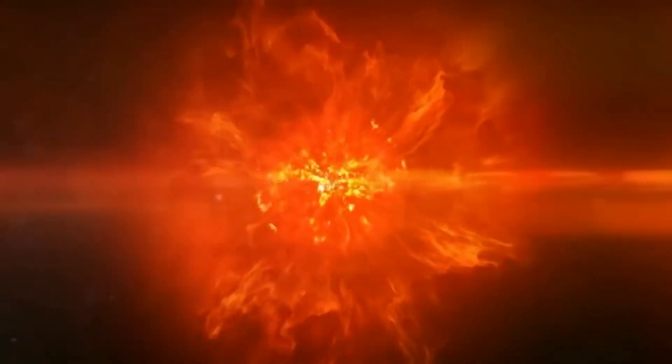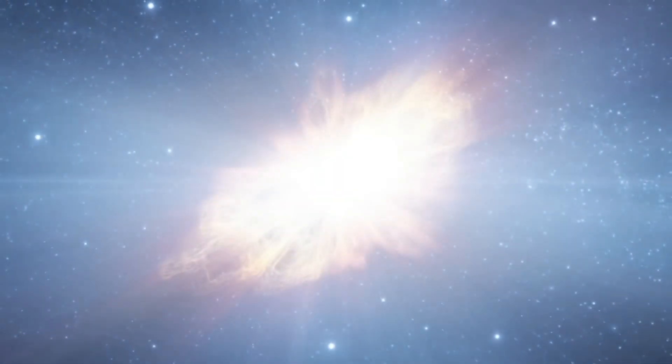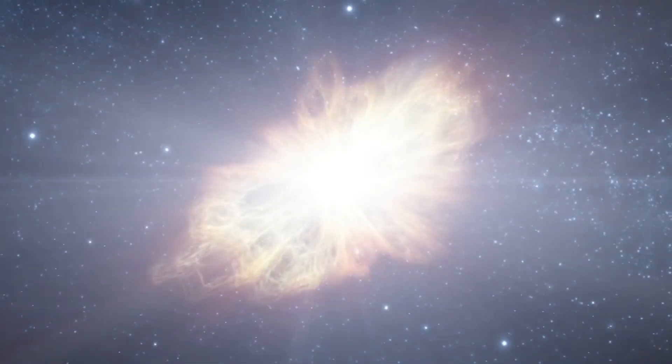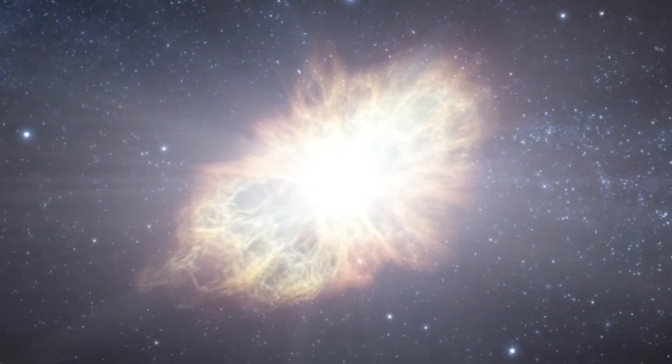When a massive star like Betelgeuse runs out of fuel, it can no longer withstand its own gravity. This causes the star's core to collapse, leading to a huge explosion that blasts the outer layers of the star into space. This explosion releases an incredible amount of energy, sometimes shining brighter than entire galaxies for a short time.